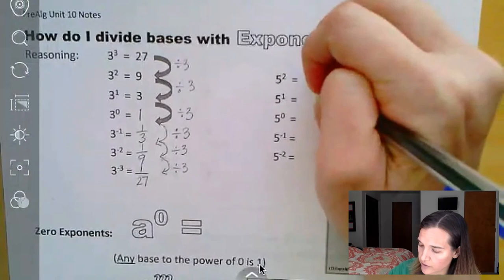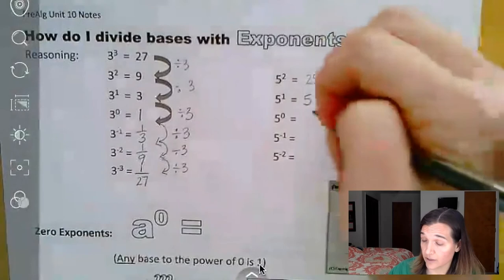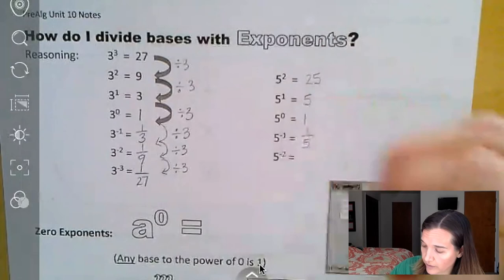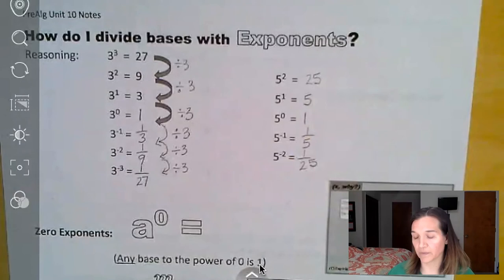So another quick example here, five squared is five times five, twenty-five. Five to the first power is just five. Five to the zero power, one. Five to the negative first power is one-fifth. And five to the negative second power is one-twenty-fifth.